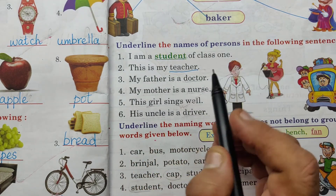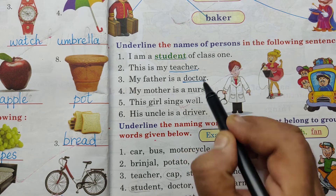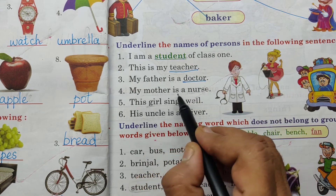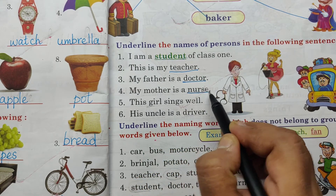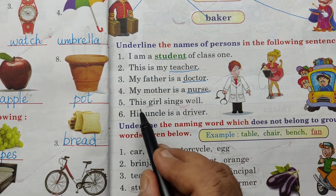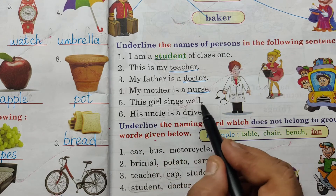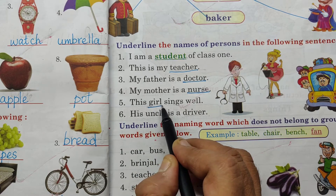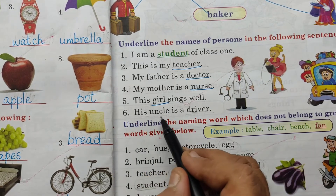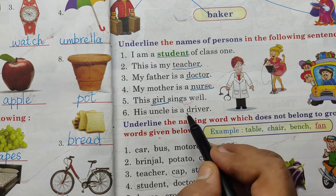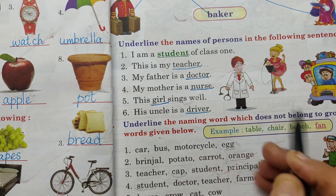My father is a doctor. Doctor - underline. My mother is a nurse. Nurse - underline. This girl sings well. Girl - names of person. His uncle is a driver. Driver - underline.